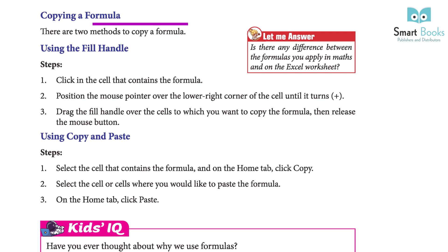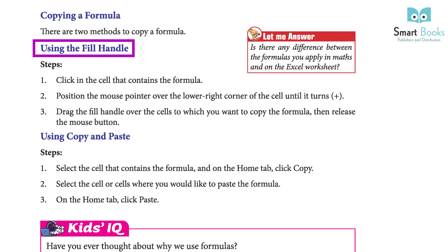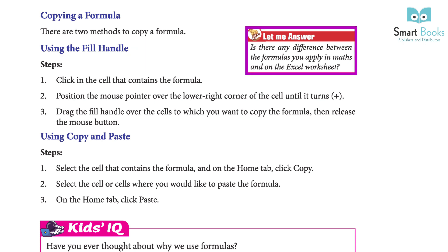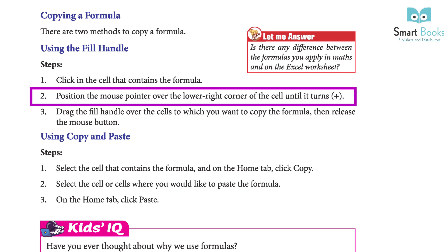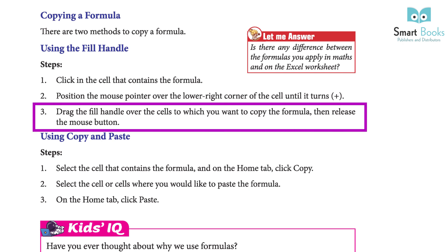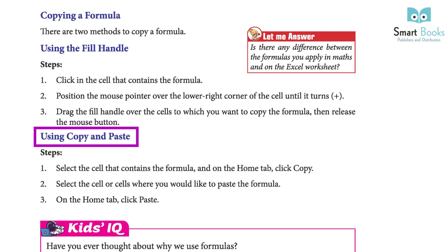Copying a Formula: there are two methods to copy a formula. Using the Fill Handle: Step 1: click in the cell that contains the formula. Step 2: position the mouse pointer over the lower right corner of the cell until it turns into a plus sign. Step 3: drag the fill handle over the cells to which you want to copy the formula, then release the mouse button.